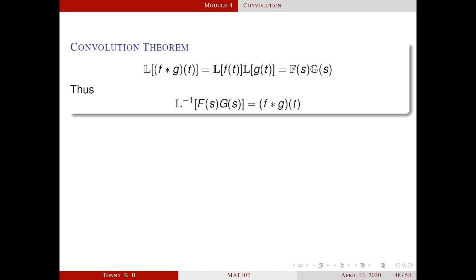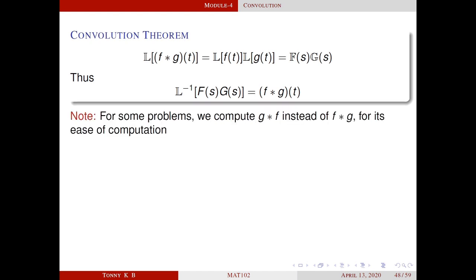This search ends with the convolution theorem. It states that L{f(t)} · L{g(t)} = L{f star g}, which is equivalent to saying L inverse of the product F(s) · G(s) equals f star g. Where F(s) is the Laplace transform of f(t) and G(s) is the Laplace transform of g(t). So L inverse of F(s) · G(s) equals f star g of t. As a note, for some problems we compute g star f instead of f star g, depending on which integral is easier.